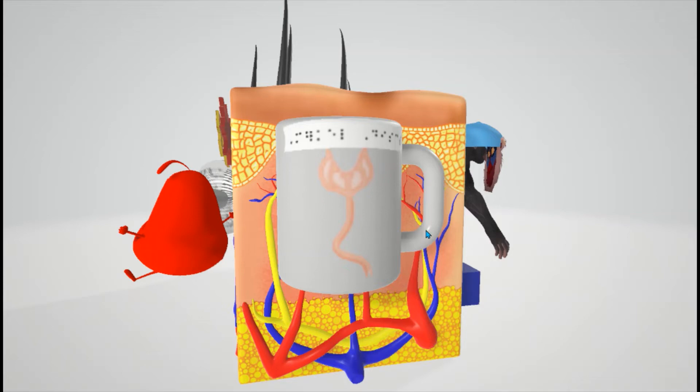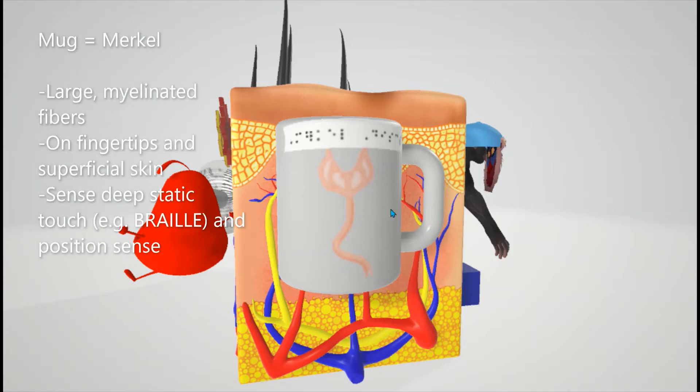So there again, it's white for large myelinated fibers, and it adapts slowly. Mugs don't move very fast. And this is a picture of a Merkel's disc over here, and I put braille on top. By the way, in braille, this actually says Merkel's discs over here. I wrote that.